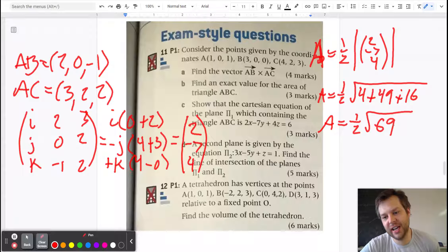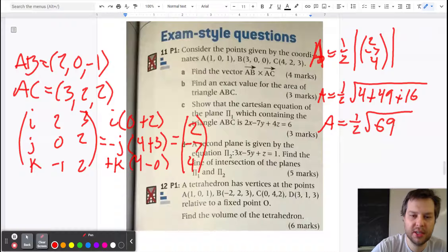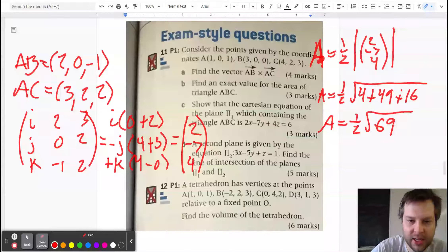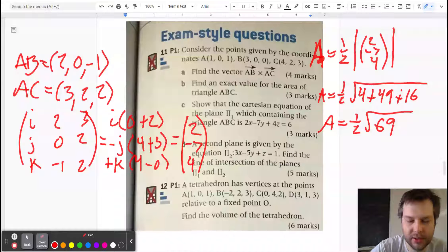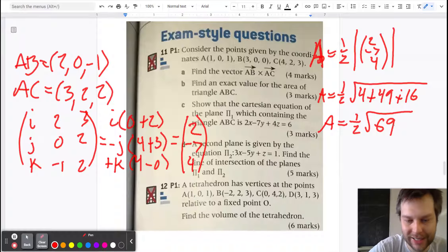Now we have part c. Show that the Cartesian equation of the plane π₁, which contains the triangle ABC, is that. And so all we need to do is choose our favorite point A, B, or C to plug in.